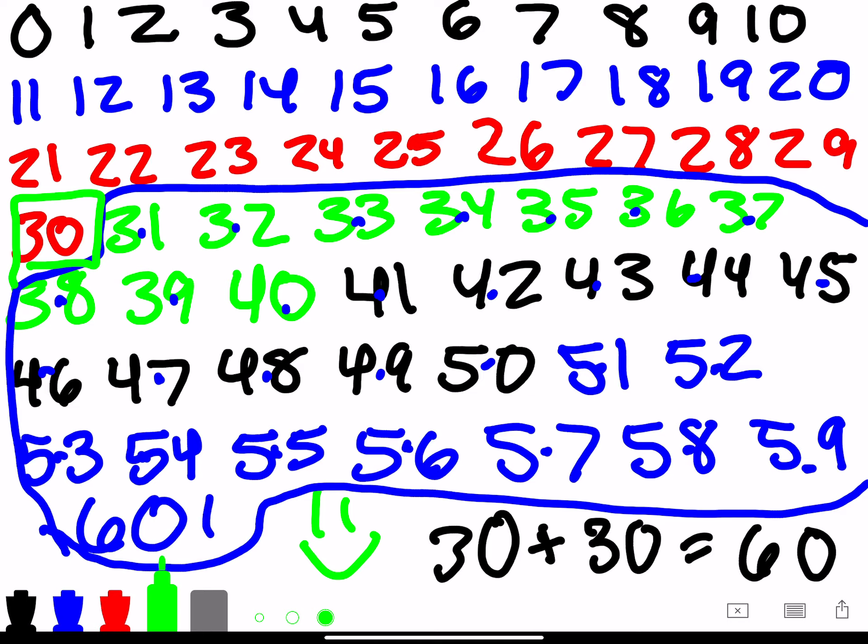So this guy right here is our halfway marker, the number 30. So again, 0, 1, 2, 3, 4, 5, 6, 7, 8, 9, 10, 11, 12, 13, 14, 15, 16, 17, 18, 19, 20, 21, 22, 23, 24, 25, 26, 27, 28, 29, 30, which is our halfway point to 60.